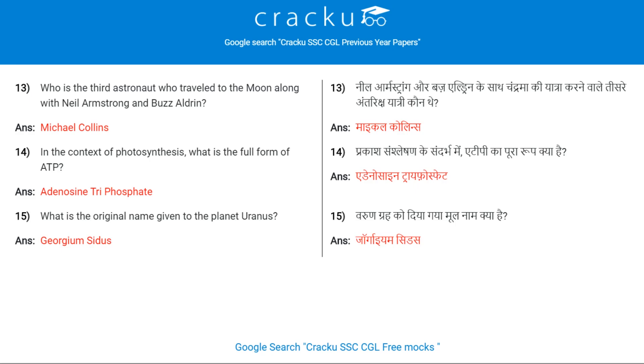Who is the third astronaut who travelled to the moon along with Neil Armstrong and Buzz Aldrin? Michael Collins.